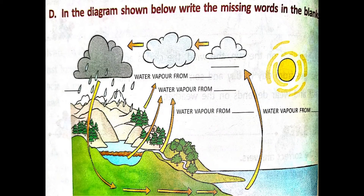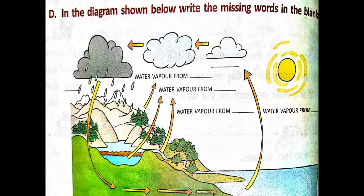Section C Roman: in the diagram shown below, write the missing words in the blanks. Children, in the diagram some words are missing, so we write to complete the words. Read the lesson two to three times and complete this picture. After completing, check answers at page number 132, figure 4.2.